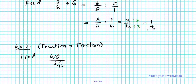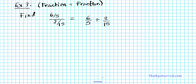This is written in a numerator-denominator orientation vertically. In order to apply the drop change flip procedure with ease, let's write this horizontally. The numerator is the dividend: 6 over 5. The denominator is our divisor: 2 over 15. Now we have 2 fractions written horizontally and it's easy to apply the drop change flip procedure.